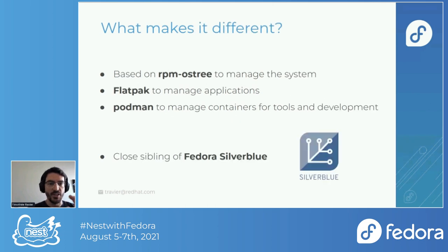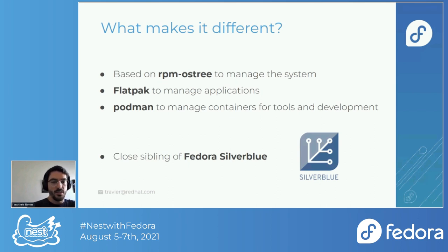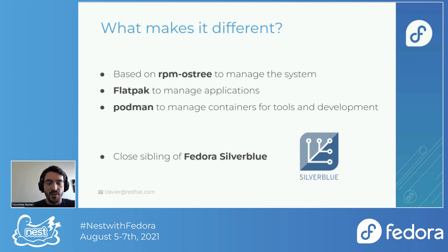What makes Fedora Kinoite actually different? We use rpm-ostree to manage the system — that's the basics. You get your system working as a consistent image and not a collection of packages that may or may not work together. Second, we use Flatpaks to manage applications, so you get most or all of your applications via Flatpak. Finally, we use Podman to manage containers and all the different tools you might need on top of the system. You might have noticed we're a close sibling of Fedora Silverblue, which is also an RPM Ostree-based desktop — but with the GNOME desktop environment.